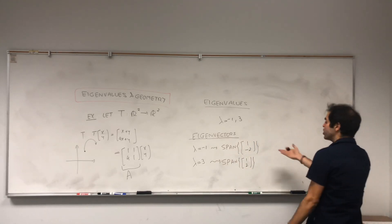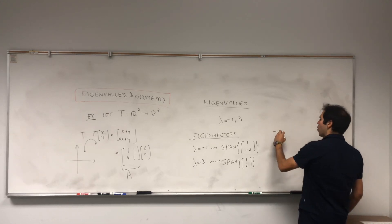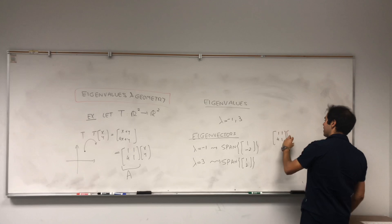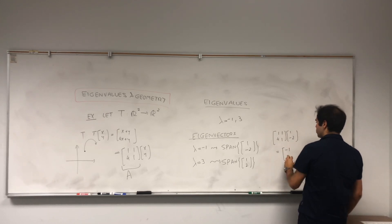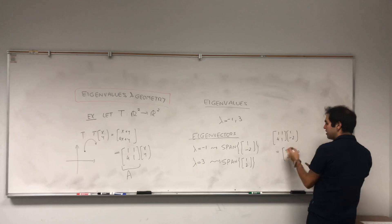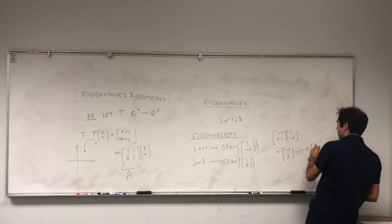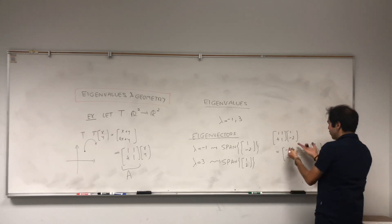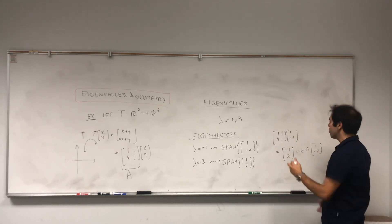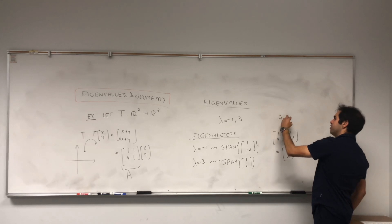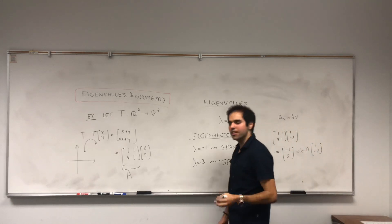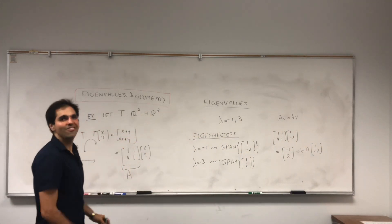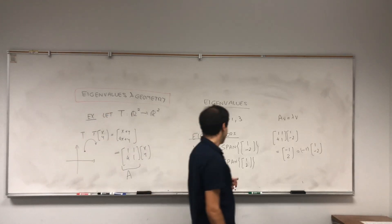You can check it: for (1, -2), the matrix [[1,1],[4,1]] applied to (1, -2) gives (1 - 2, 4 - 2), which is (-1, 2). And that's precisely -1 times (1, -2). So therefore, (1, -2) is an eigenvector corresponding to eigenvalue -1, because by definition an eigenvector is a vector v such that Av = λv.